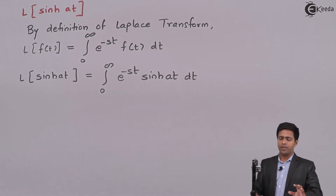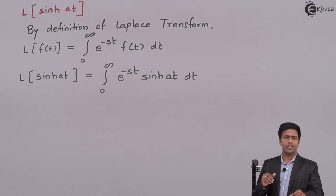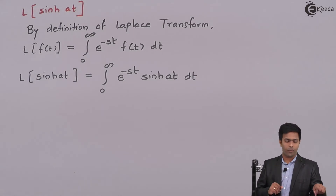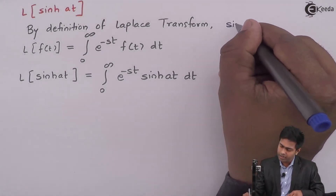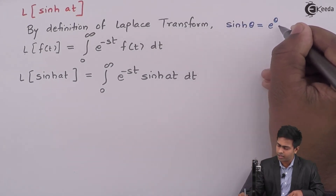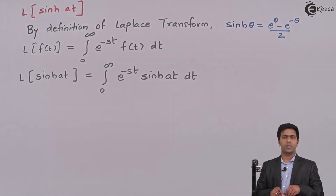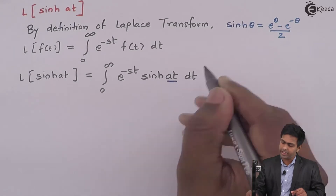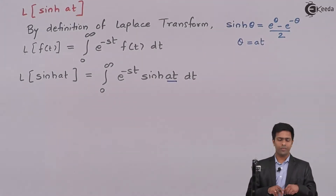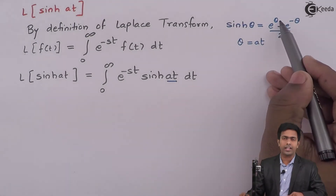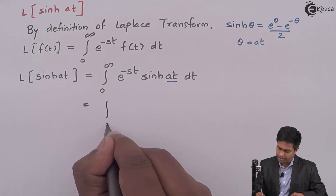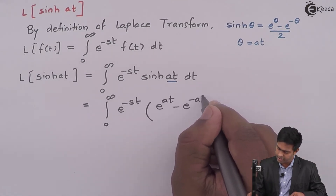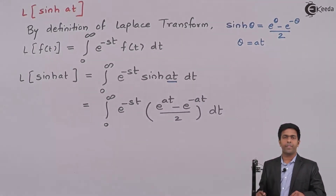To evaluate the integral of e^(-st) sinh(at) with respect to t, we convert the hyperbolic sine to exponential form using the formula: sinh(θ) = (e^θ - e^(-θ)) / 2. Comparing sinh(at) with sinh(θ), we get θ = at. Substituting, the integral becomes the integral from 0 to infinity of e^(-st) times (e^(at) - e^(-at)) / 2 dt.